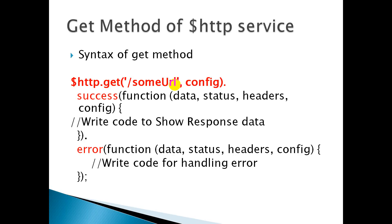Inside the success function, you get a response from the server. There are some arguments: 'data' holds whatever data you are getting from the server; 'status' is the HTTP status — if your Ajax request completes successfully, you get a status in the range 200 to 299, for example 200. 'Headers' has the information of your request and response headers, and config is optional. You write your scope-setting code inside this success function.